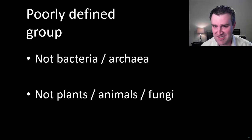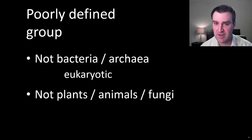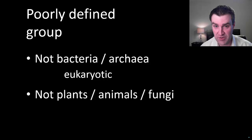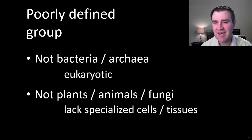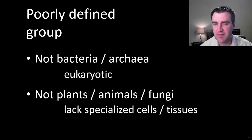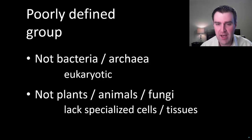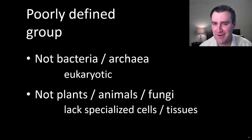We know that protists are definitely not bacteria or archaea because they're eukaryotic organisms made of eukaryotic cells. Remember that plants, animals, and fungi are also eukaryotes. So why are protists not plants, animals, or fungi? We have this fuzzy definition where we say that even if they might be multicellular, they sort of lack cells that do specific jobs for the organism. So we say protists are sort of everybody who's not a bacteria, a plant, an animal, or a fungus.